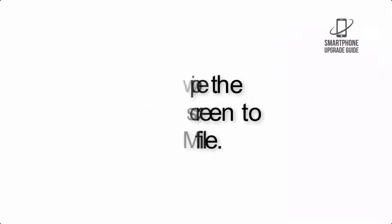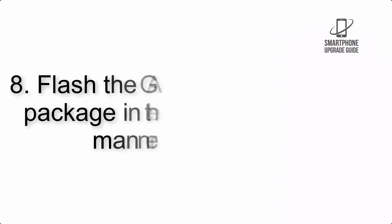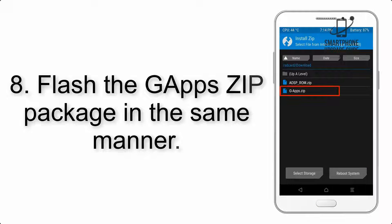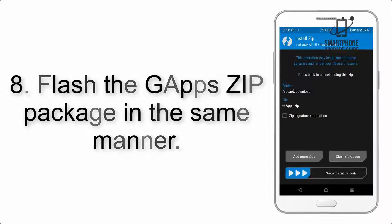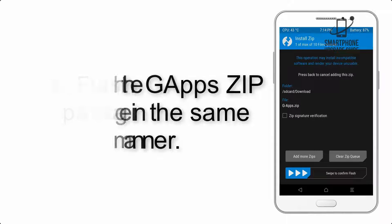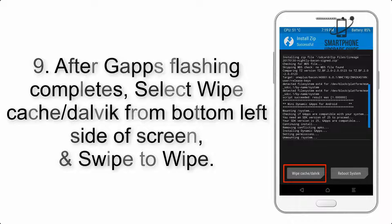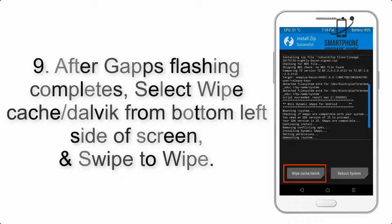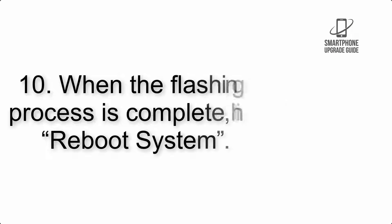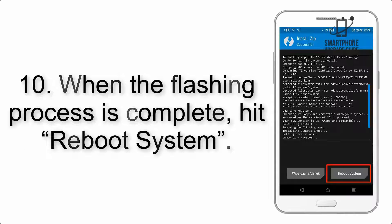Step 7: Swipe the button on the screen to install the ROM file. Step 8: Flash the GApps zip package in the same manner. Step 9: After GApps flashing completes, select Wipe Cache and Dalvik from the bottom left side of the screen and swipe to wipe.